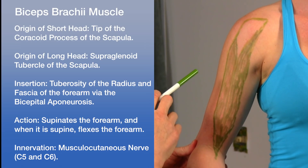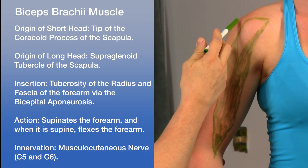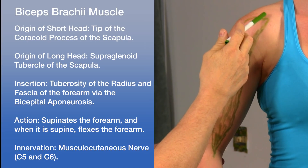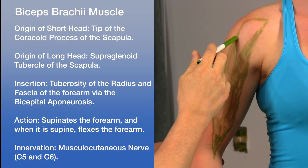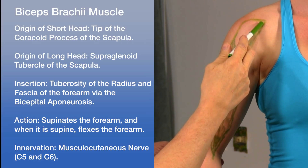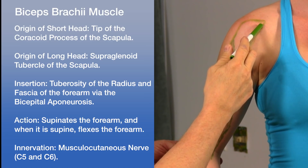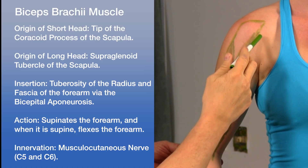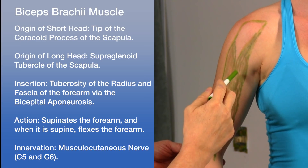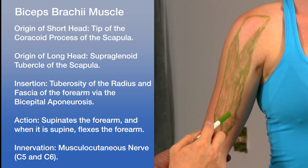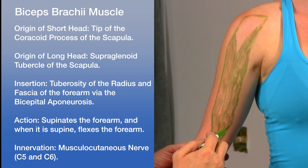The biceps brachii has two origins. The long head arises from the tubercle above the glenoid cavity of the scapula, travels through the shoulder joint between the greater and lesser tubercles, and along the bicipital groove before merging with the muscle body. The short head starts as a tendon at the coracoid process on the lateral edge of the scapula. The two heads combine and form one tendon, which passes anterior to the elbow joint and inserts at the bicipital tuberosity of the radius.